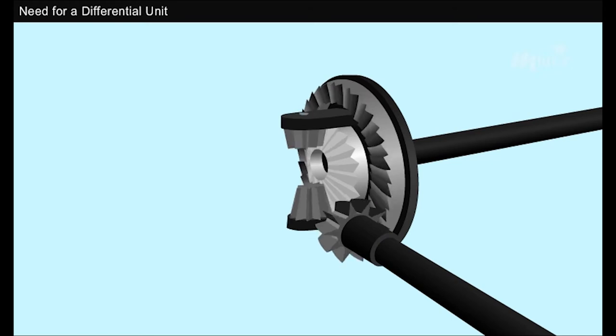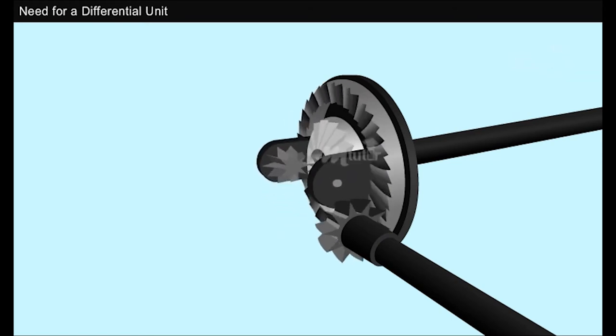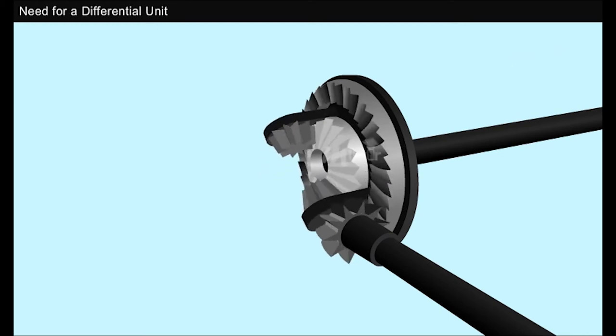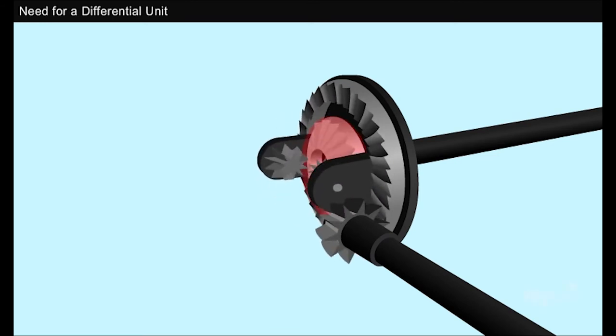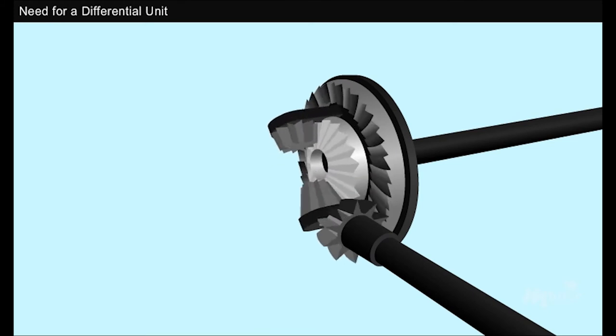Two spider gears facing each other are connected to the ring gear. These spider gears are able to rotate along the ring gear and are able to spin on their own axis. These two spider gears are further engaged with two gears called side gears or axle gears which are mounted on two shafts that hold the wheel at its end.